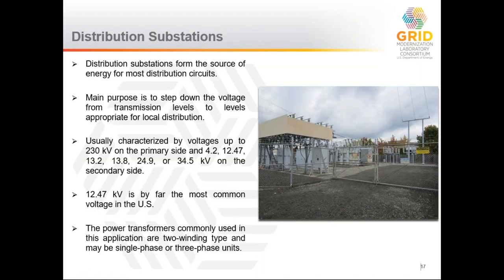The most important part of a distribution system is the distribution substation. For most distribution circuits, this is the source of power that steps down voltage from the transmission or sub-transmission system — something on the order of 100,000 to 200,000 volts, possibly up to 230,000 or 500,000 — down to voltages typically less than 50,000 volts. The most common voltage in North America is 12.47 kV, though 13.2, 13.8, 24.9, and 34.5 kV are also used. Higher voltages allow more efficient power movement over distance but require larger, more expensive equipment.